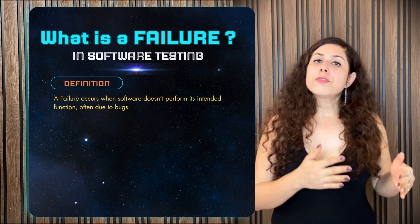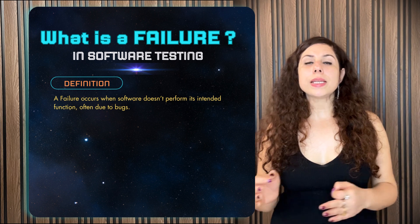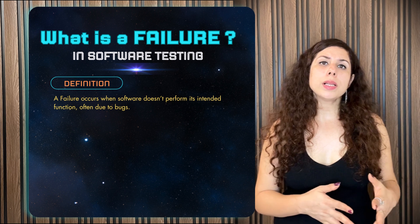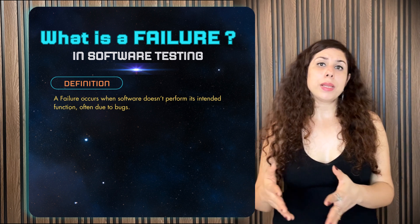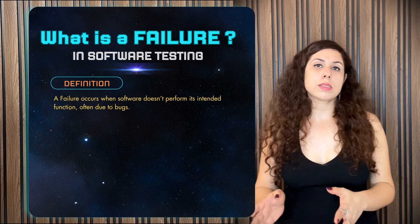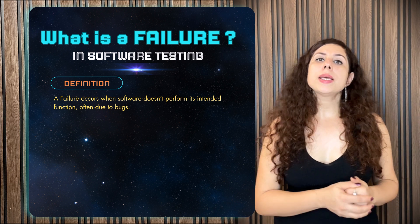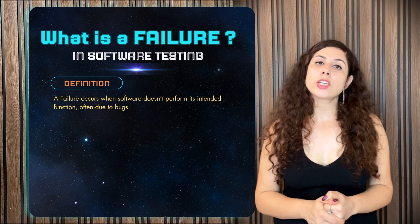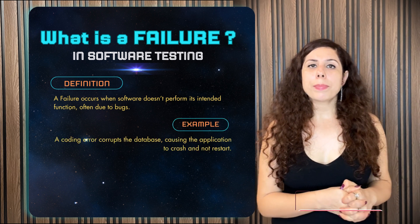Now, what is a failure? Failure happens when the software doesn't perform its intended function, often due to a bug or a defect. For example, due to some coding error in a particular scenario, an application crashes and after that will not start because the database is corrupt. This is called a software failure — a bug or defect started a chain of reactions which led the whole system to fail.